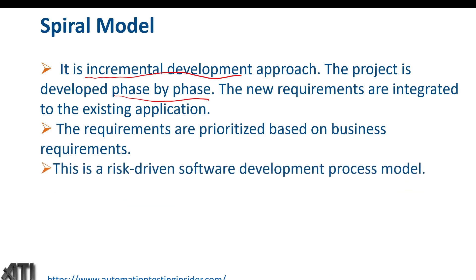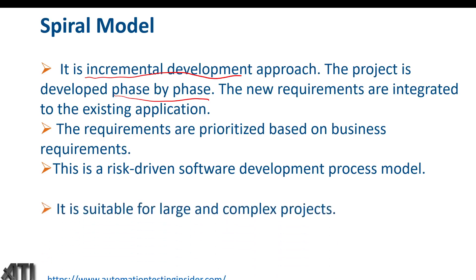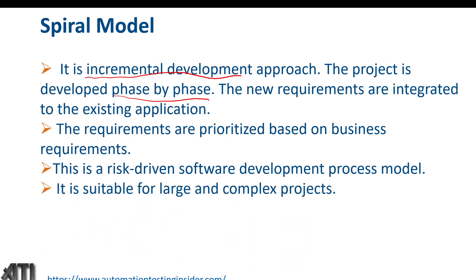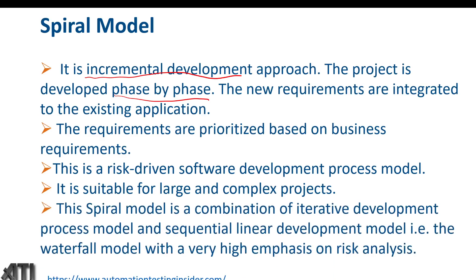Spiral model is a risk-driven software development process model. It is the combination of waterfall model and iterative development model, but with an extra factor — risk analysis. There is a high percentage of risk analysis in spiral model, which is why it is also called a risk-driven software development process model. It is suitable for large and complex projects, combining iterative development with the sequential linear approach of waterfall, with very high emphasis on risk analysis.